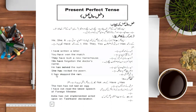In negative sentences, we add not after the helping verb, just as we did in the continuous tense. The structure is: subject, then has or have, then not, then third form of verb, then object. For example: The hen has not laid an egg. I have not read the latest speech of the foreign minister.